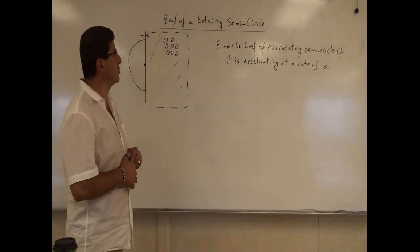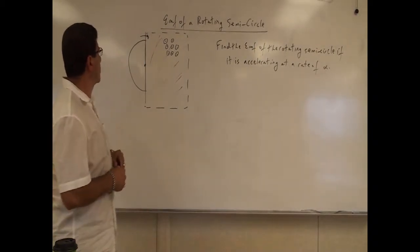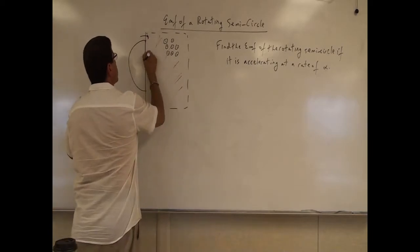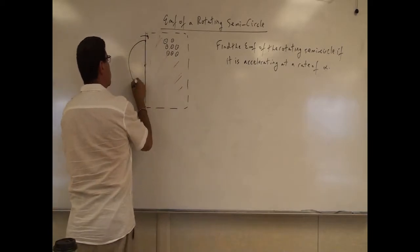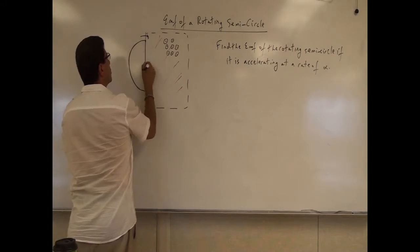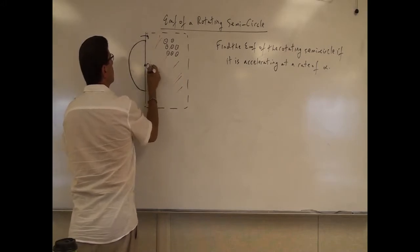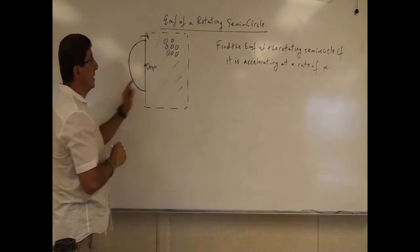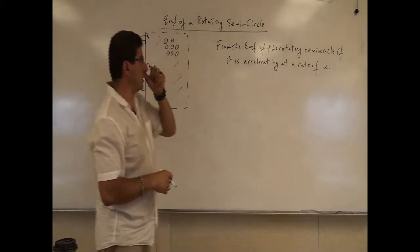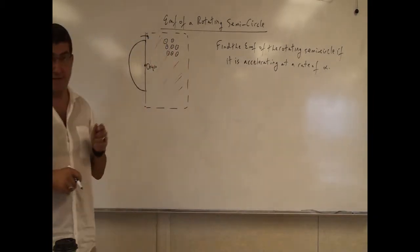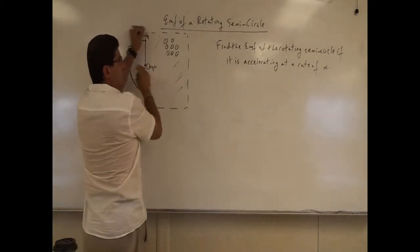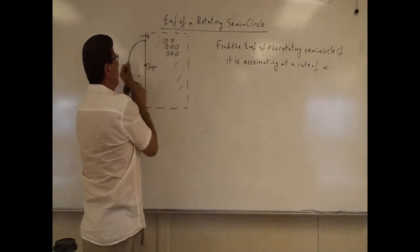Problem: I'm calling this an EMF of a rotating semicircle. We have a semicircular wire pivoted about its origin — the vertex — and it's rotating about that origin. The problem says: find the EMF of the rotating semicircle if it is accelerating at a rate of alpha, which is the angular acceleration. So it's picking up speed, rotating faster and faster.